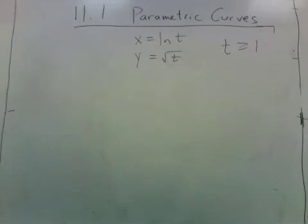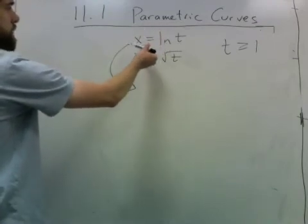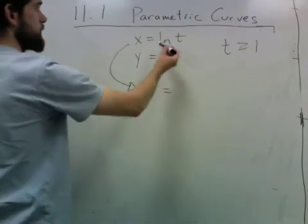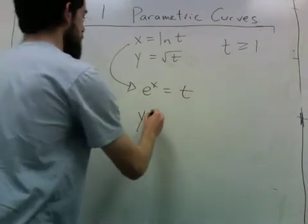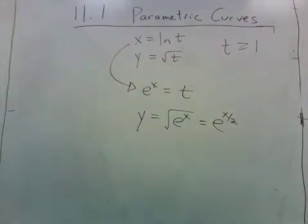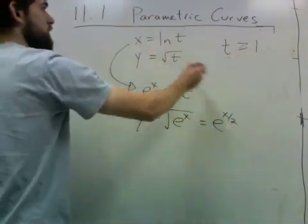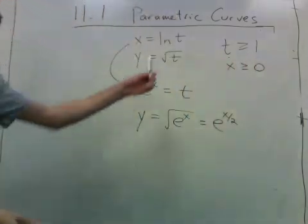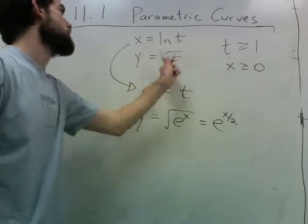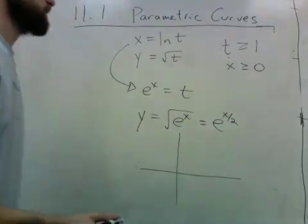Here's a final plotting example. To plot this one, it's best to figure out what the Cartesian equation is. So that means we want to get rid of the parameter. So one way to do that, I can take this, raise both sides to the exponent of e, so e to the x equals e to the natural log of t, which is just t. So y equals square root of e to the x, which is just e to the x over 2. And we're told t is greater than or equal to 1. That tells us x is greater than or equal to 0, because when t is 1, natural log is 0, and when t is bigger than 1, it's positive. So plotting this is no problem. We just plot e to the x over 2 for x greater than 0.